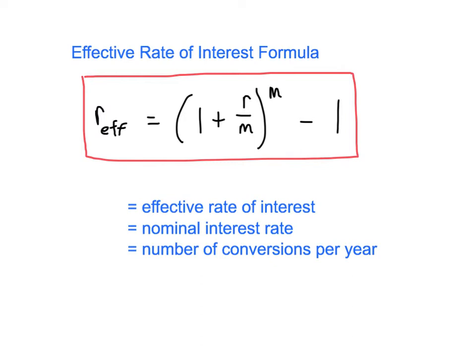And just remember that these pieces in the formula: R sub EFF is our effective rate, the nominal interest rate is still R, and the number of conversions per year is still M. Let's take a quick look at an example and then we'll wrap this video up.